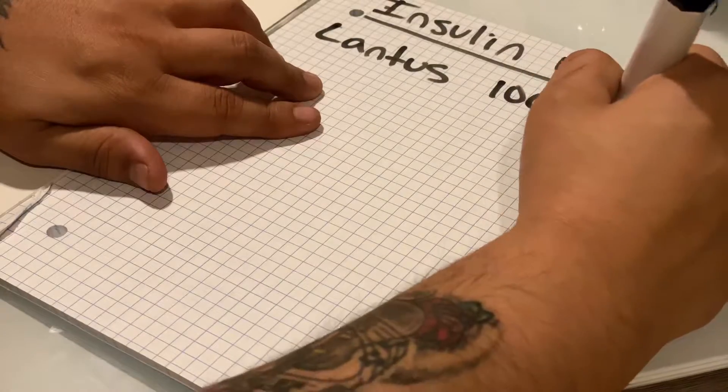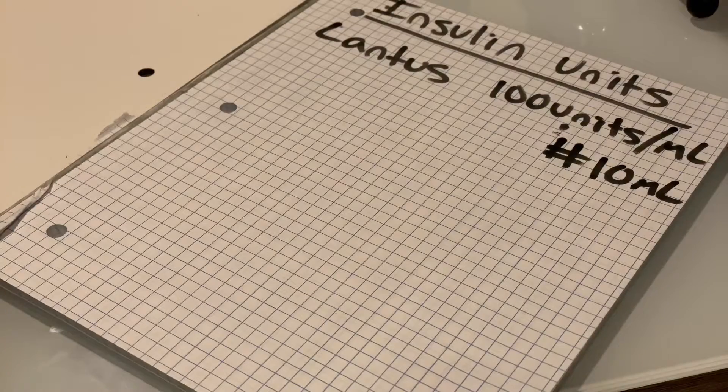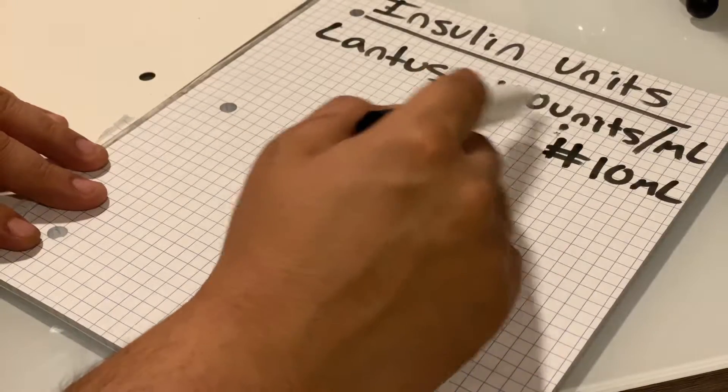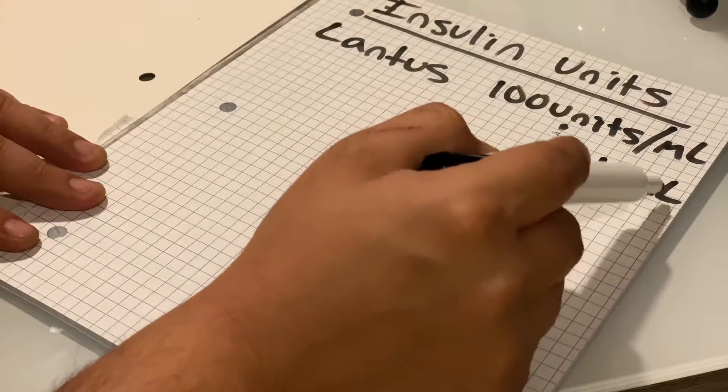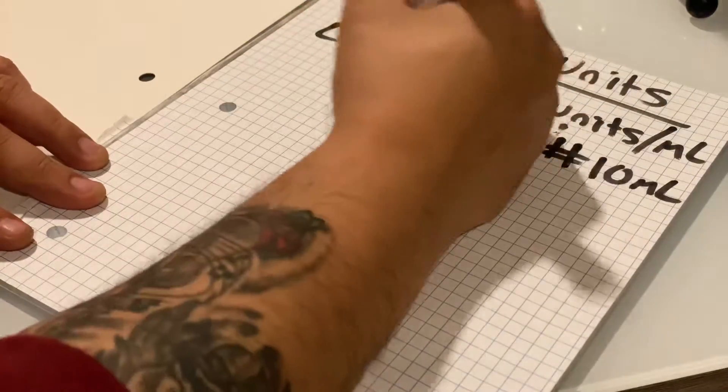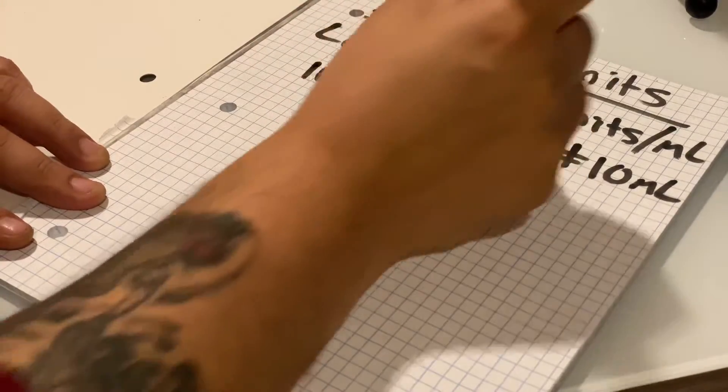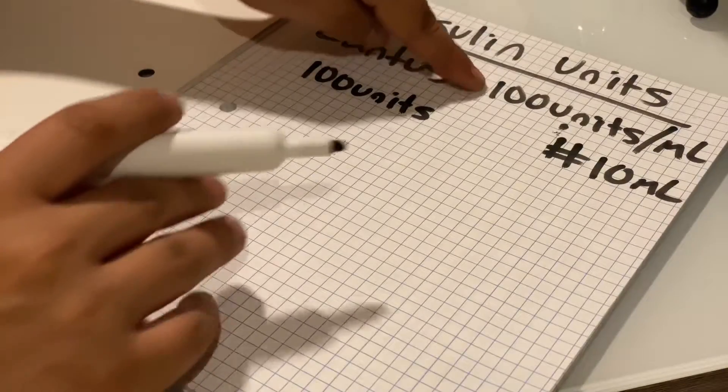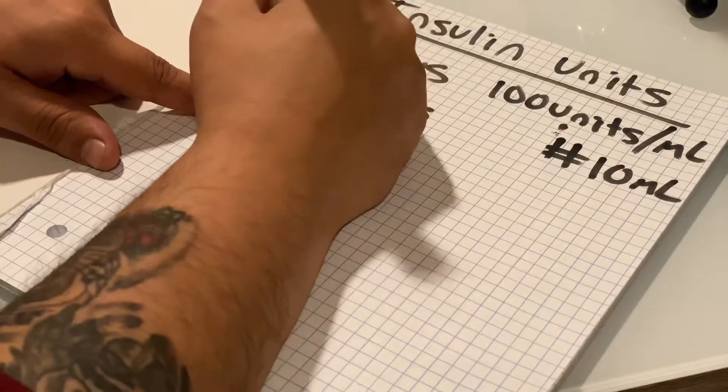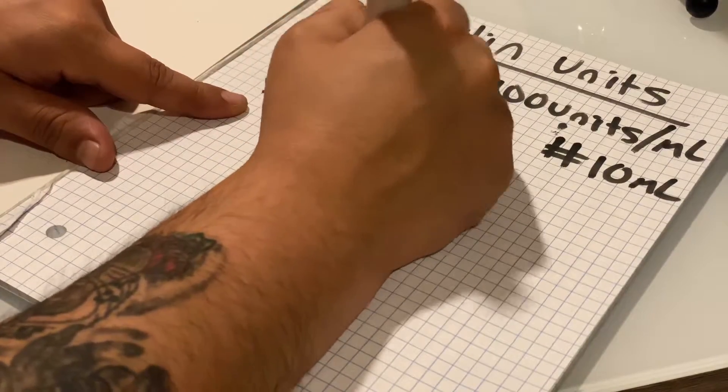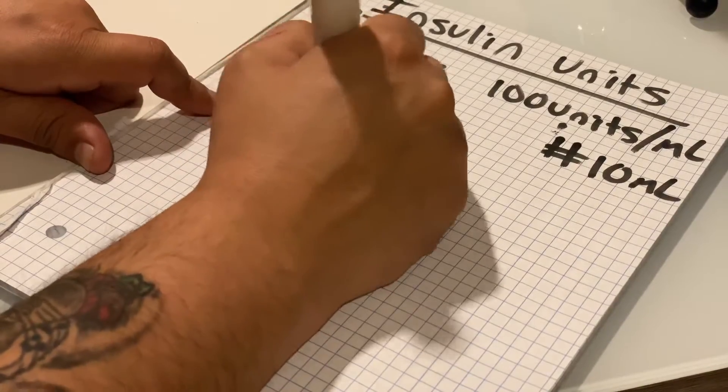For a quantity of 10 milliliters, which you see dispensed a lot, remember for every milliliter we have 100 units. So if we have 10 milliliters, we multiply that by 100. Our 100 units, which comes from our strength, gets multiplied by our quantity of 10, which gives us 1,000 units.